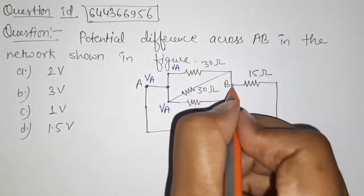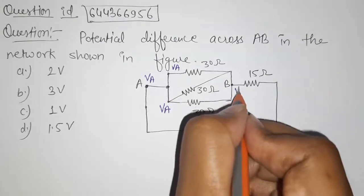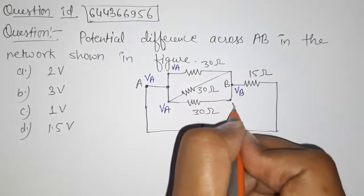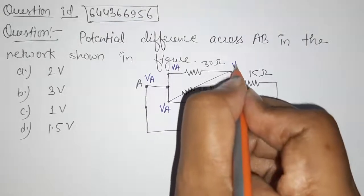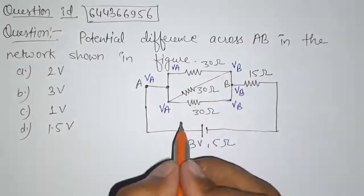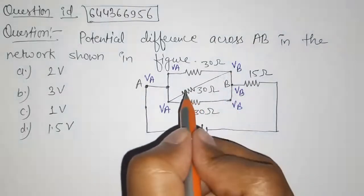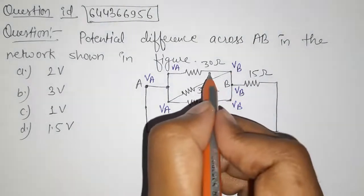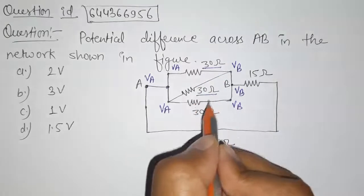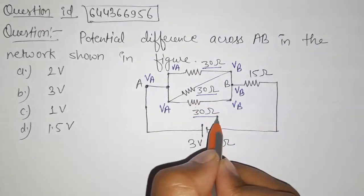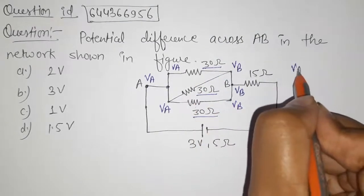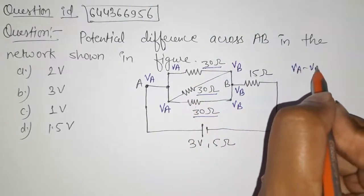The potential at point B we have taken to be VB, so all nodes connected to B will also be at VB. The potential difference across each of the three 30-ohm resistors is therefore VA minus VB.